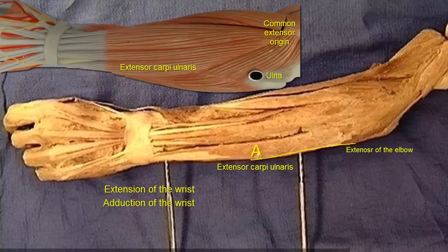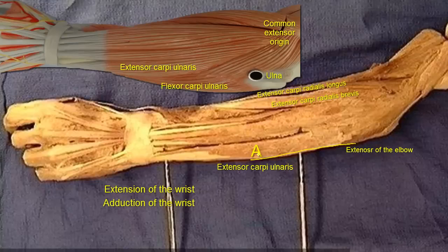Acting together with the carpal extensors, extensor carpi radialis longus and brevis, it produces extension of the wrist, because the adduction component of flexor carpi ulnaris will be cancelled by the wrist abduction component of both extensor carpi radialis longus and brevis. When the ulnar carpals work together, that's to say flexor carpi ulnaris and extensor carpi ulnaris, then flexion will cancel out extension and only adduction of the wrist remains.